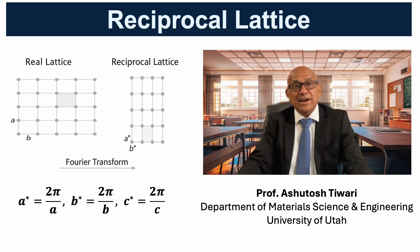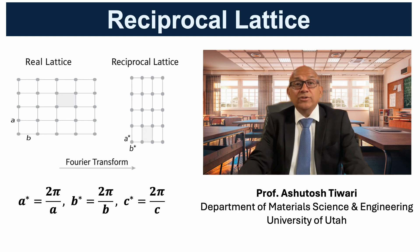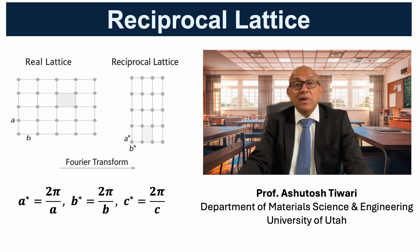For a cubic lattice, A* equals 2π divided by A, and similarly for B and C. In general, the reciprocal vectors are obtained using cross products of the real lattice vectors, defined such that the dot product of A and A* equals 2π. This inversion relationship explains why large spacings between planes in real space correspond to small spacings in reciprocal space, and why diffraction angles contain direct information about the lattice parameters of the crystal.